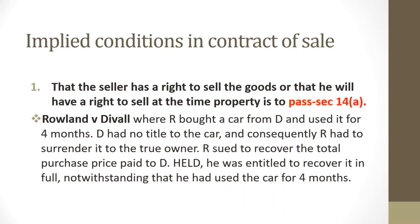Moving to the main area of discussion — the implied conditions in a contract for sale of goods. The first implied condition under Section 14(a) is that the seller must have the right to sell the goods at the point at which property passes. For example, if person A sells a car to person B and it turns out the car didn't belong to person A, person B can sue and claim back the full purchase price, while person C as the rightful owner repossesses the car.